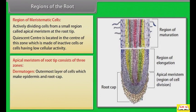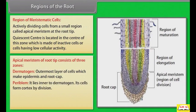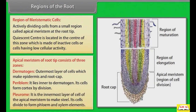Dematogen is the outermost layer of cells which makes the epidermis and root cap. Periblem lies inner to the dematogen; its cells form the cortex by division. Plerome is the innermost layer of cells of the apical meristem and forms the stele. Its cells divide to form phloem and xylem elements.